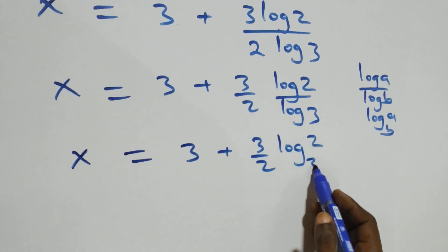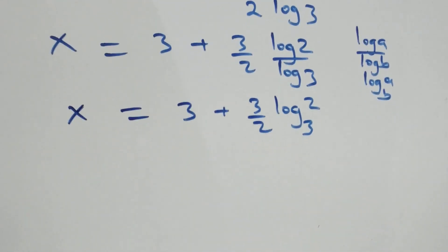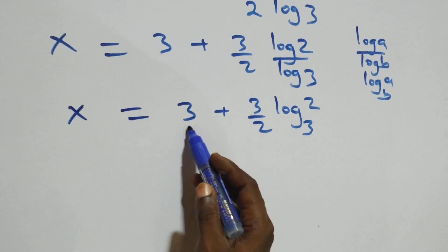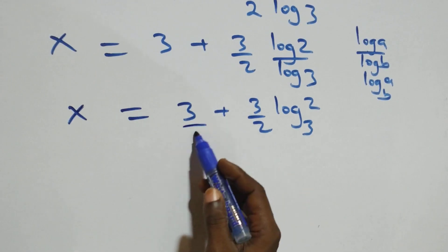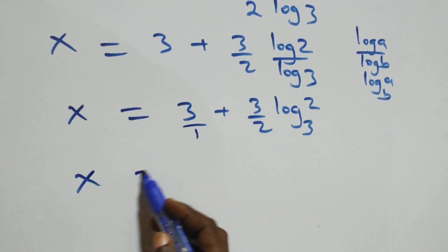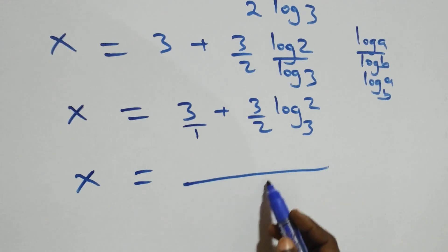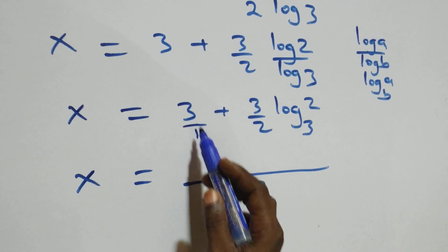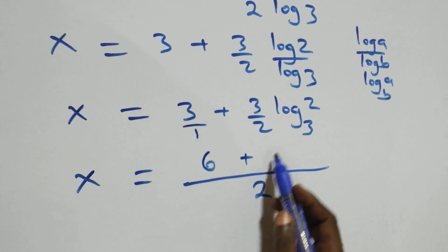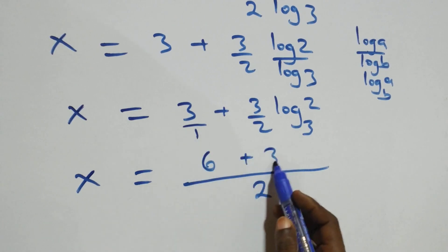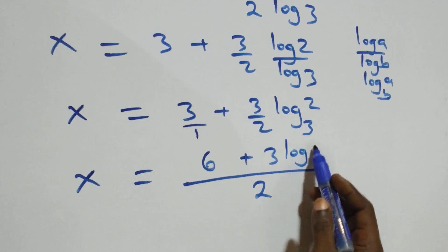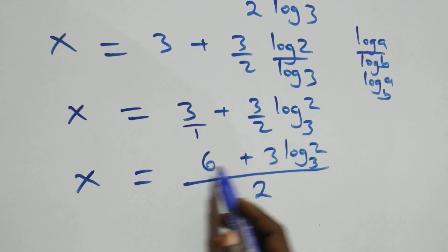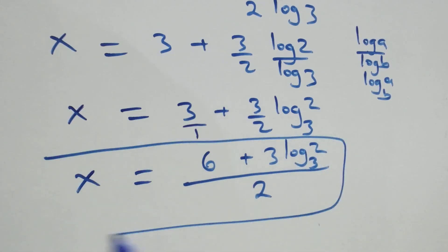We bring this together as one fraction: 3 is three over one, with denominator 2, giving 6 over 2. So x equals (6 + 3·log₃ 2) over 2. Here we have the value of x as x equals (6 + 3·log₃ 2) / 2.